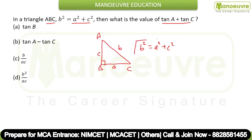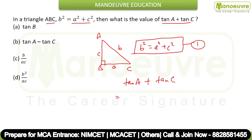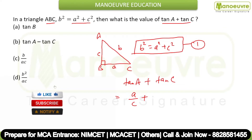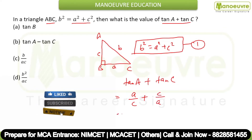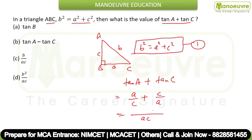Let this be equation one. Now tan A plus tan C — tan A is opposite over base, considering angle A, so tan A equals a upon c, and similarly tan C equals c upon a. Taking their LCM, which is a into c, by cross multiplication you get A square plus C square in the numerator. Since A square plus C square equals B square, we can write B square upon AC.